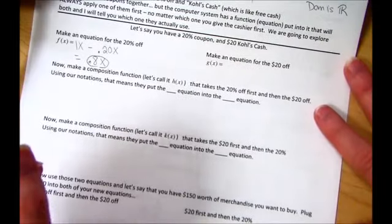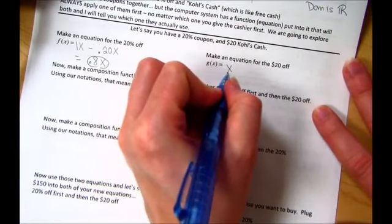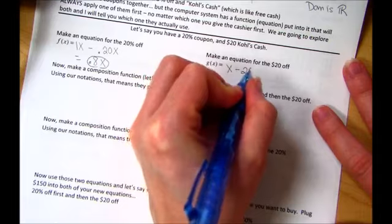Now for the $20 off, you take your total, and you simply take away $20. That one's a lot easier. You just subtract $20 off your final bill.